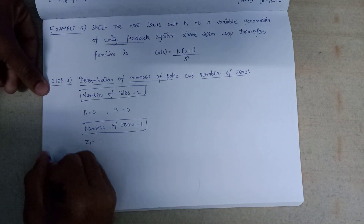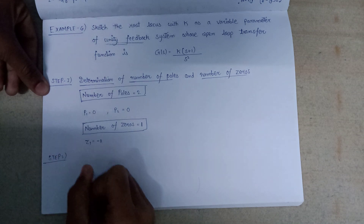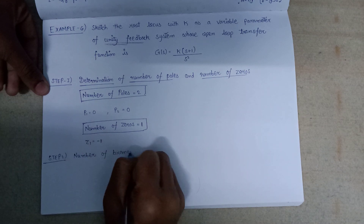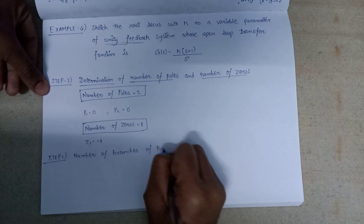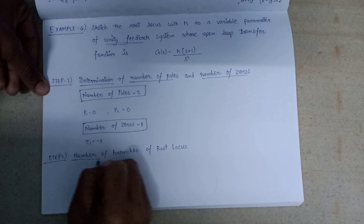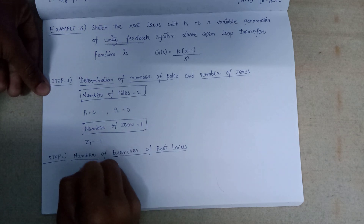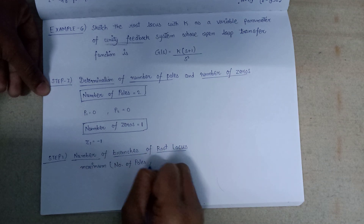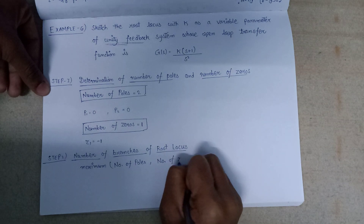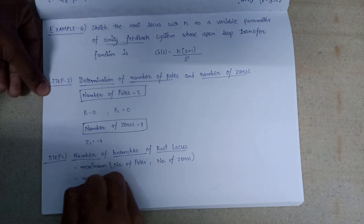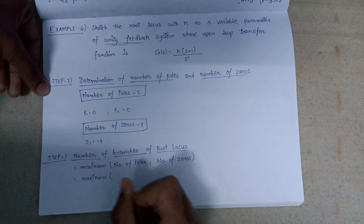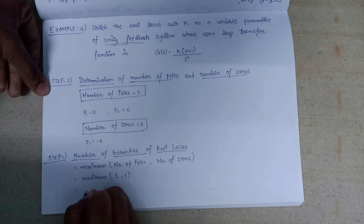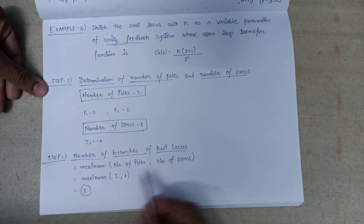Moving on to the next step, that is step number 2: calculation of number of branches of root locus. The number of branches of root locus can be determined by the formula: maximum of (number of poles, number of zeros). Here maximum of 2 and 1 is 2, so the number of branches of root locus is equal to 2.